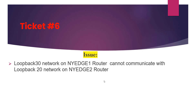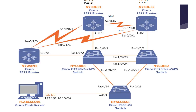We are on ticket number six. We have two networks: one on the NYH1 router and one on the NYH2 router. On NYH1 we have a loopback 30 network, and on NYH2 we have a loopback 20 network. Both networks are unable to communicate with each other, and we need to find out why. NYH1 has loopback 30 with IP address 30.0.0.1/24, and NYH2 has loopback 20 with IP address 20.0.0.1.